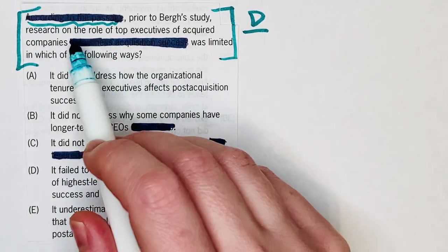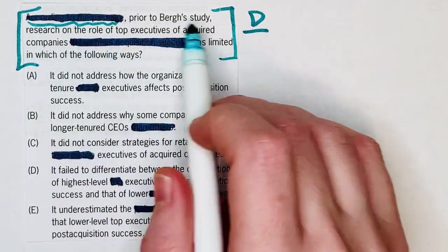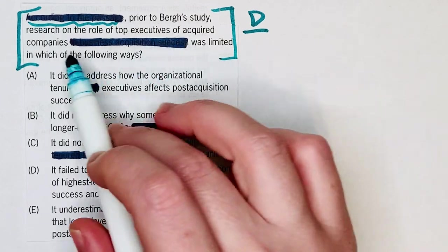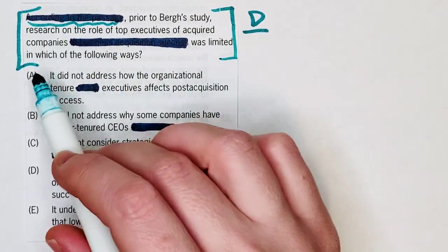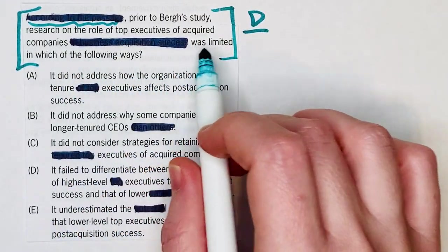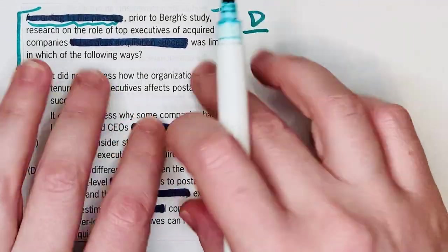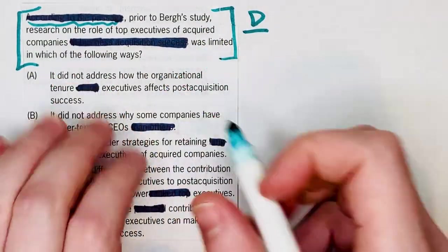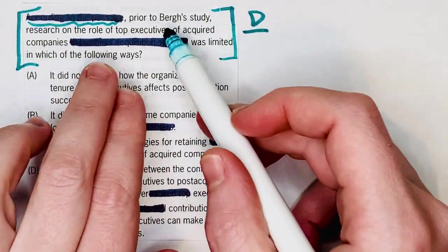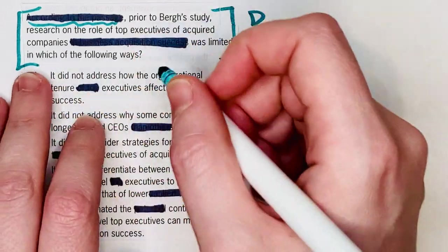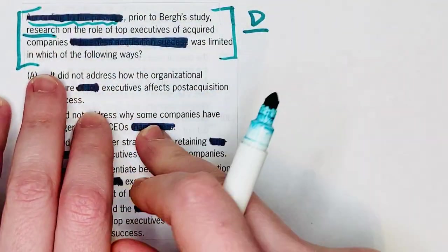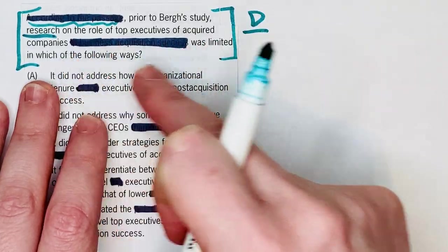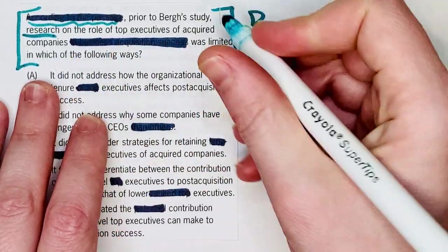So let's take a look at the question stem. Prior to Berg's study, research on the role of top executives of acquired companies was limited in which of the following ways? So the first thing we probably want to do here is rephrase this. It's saying prior to this study, research — important keyword — on the role of the top executives of acquired companies was limited.